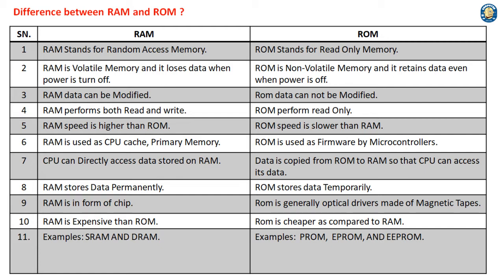5. RAM speed is higher than ROM. ROM speed is slower than RAM.